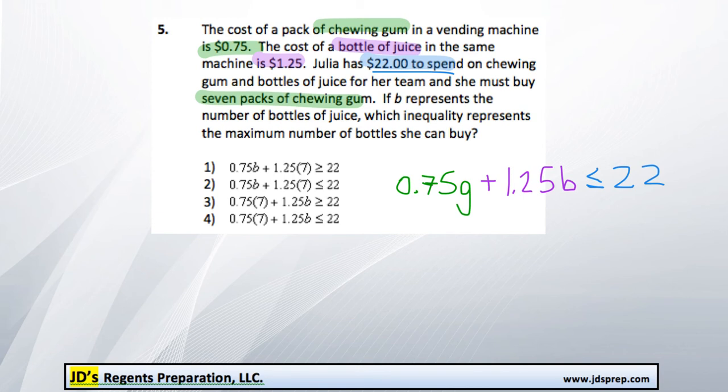Now, the other piece of information we have is that she's buying 7 packs of chewing gum, so we know what this G number is—it's 7. So we're going to do 0.75 times 7 plus 1.25 times the number of bottles, and that will still be less than or equal to 22.